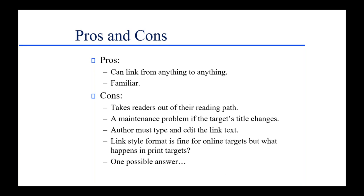A major con is that it takes the readers out of their reading path. Let's say I'm reading a topic and halfway down I find a term I'm not familiar with and it's linked, so I click it. It takes me to an explanation, I find something else confusing and follow that link too — I've jumped down a chain of links completely away from what I was trying to do in the first place. This is a problem with hyperlinks and also with cross-references, but there are solutions I'll touch on.